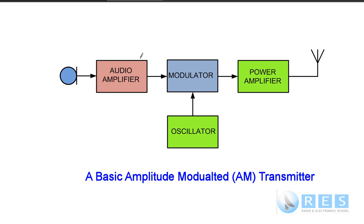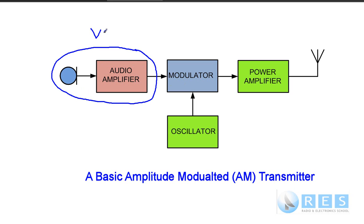Modulation is a process by which we take audio from voice — so this is our voice going into a microphone and being amplified. And the oscillator is a radio frequency signal source. Let's imagine it's on 1 MHz.